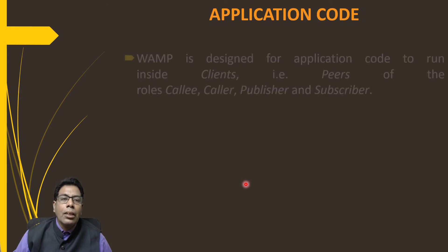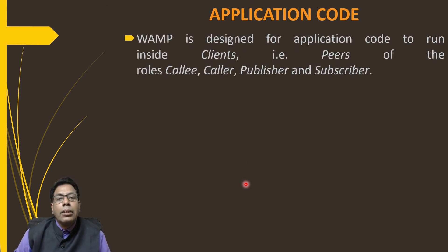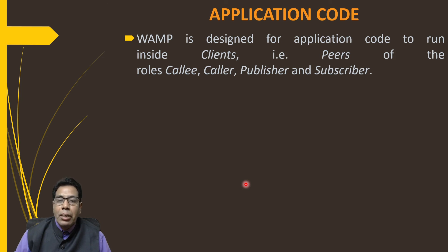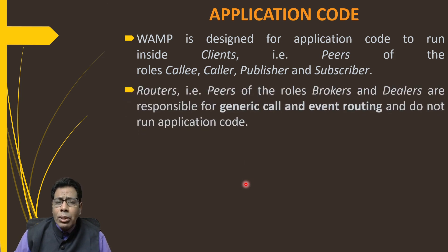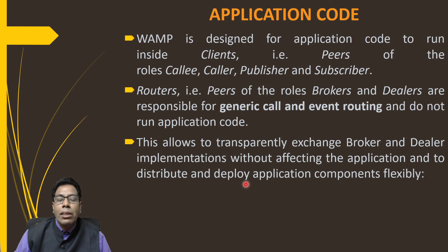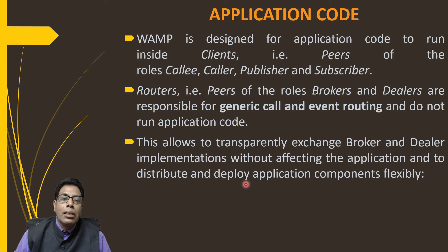The application code is designed to run inside the clients — the peers with roles of caller, callee, publisher, and subscriber. The broker and dealer are responsible for generic call and event routing and do not run the application code. This allows transparent exchange of broker and dealer implementations without affecting the application, making WAMP a very flexible protocol.